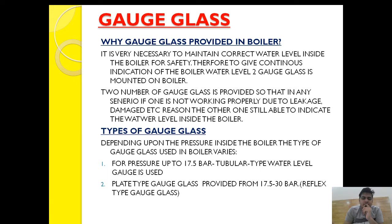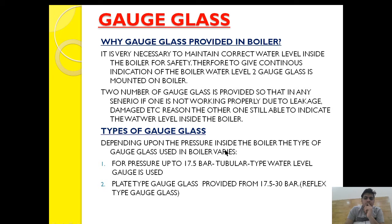To give continuous indication of the boiler water level, two gauge glasses are mounted on the boiler. Gauge glass is provided so that we are always aware of the water level condition inside the boiler. We need to know the water level because if the water level is too low or too high, both conditions are not good and may lead to dangerous scenarios. For that reason we need to closely monitor the water level, and two gauge glasses are provided for safety.